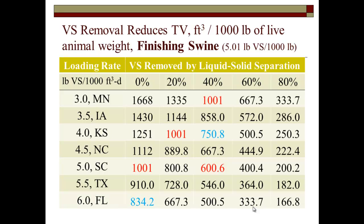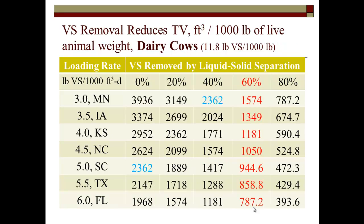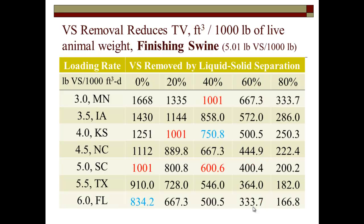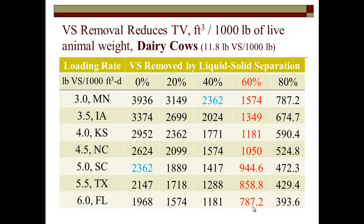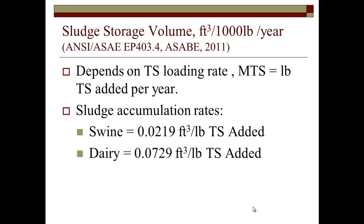It costs money for every cubic foot I've got to build. For dairy cattle, it's similar but harder — I've got to take out about 60% of the VS to be equivalent to swine manure. Literally when I'm talking with producers, I'll show them a system that took out 60% of their volatile solids and say, you're now worth pigs in terms of lagoon design — because there's so much more material in dairy manure. The idea is that liquid-solid separation lets us get material out rather than having to go through the biological process to treat it.